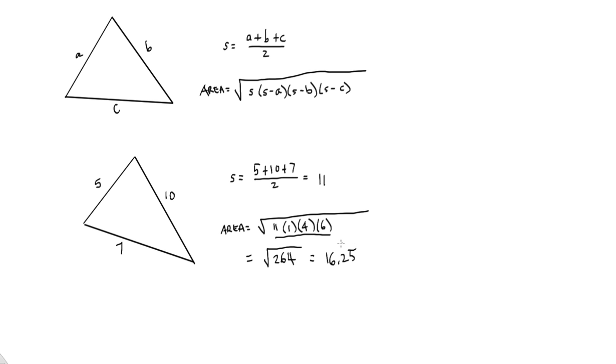That's Heron's formula. Not much more to say than that. It's a pretty straightforward formula. Add the three sides together. Divide by 2 to find S. And then your area is the square root of the product of S and the three differences between S and the sides. That's all there is to it. Thanks!